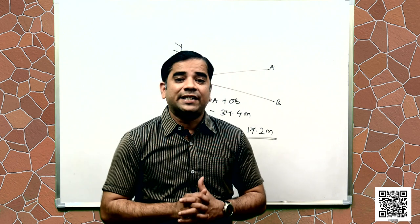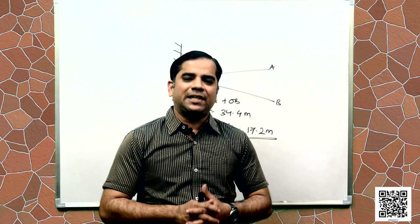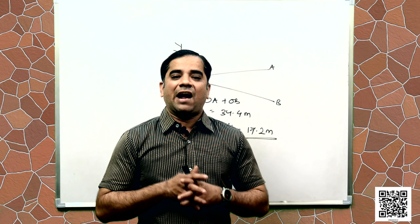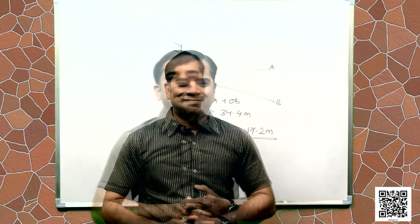Echoes may be heard more than once due to successive or multiple reflections. The rolling of thunder is due to the successive reflections of the sound from a number of reflecting surfaces, such as the clouds and the land.